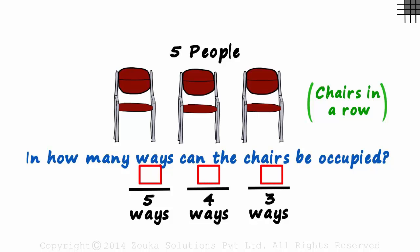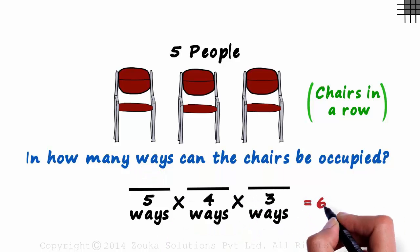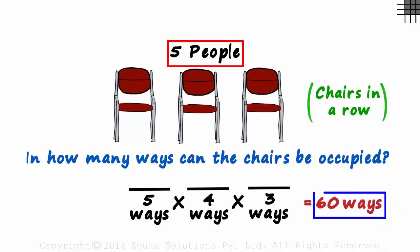Of course it will be AND. We need to look at the ways in which all three chairs are occupied. So we multiply these ways, and we get the answer as 60 ways. If there are five people, then there are 60 ways in which these three chairs can be occupied.